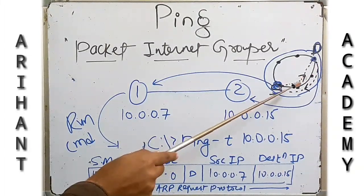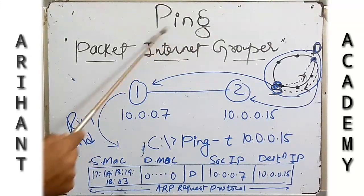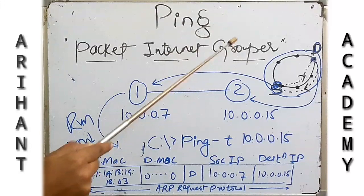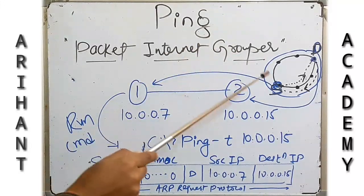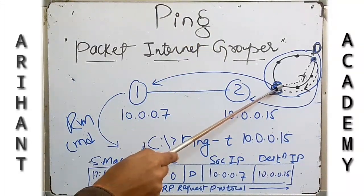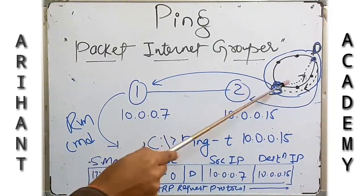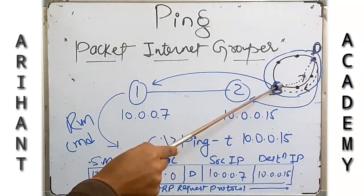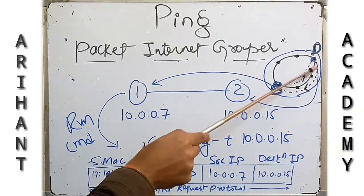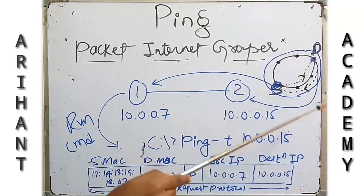So how to check? For that, there is a program called PING — Packet Internet Grouper. Basically, PING sends commands through ICMP, that is Internet Control Message Protocol, which will go throughout the connected system and check whether the destination IP is present or not.